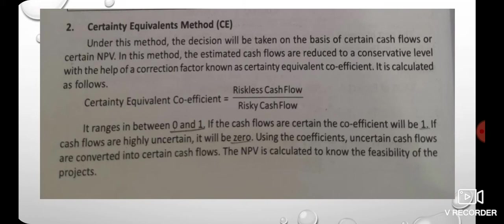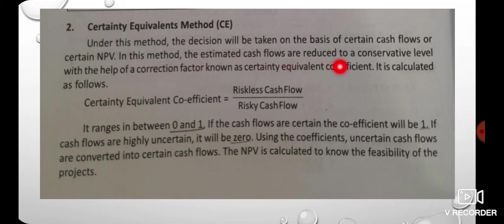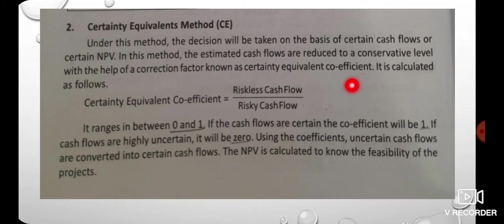Under the certainty equivalent method, the decision will be taken on the basis of certain cash flows or certain NPV. In this method, the estimated cash flows are reduced to a conservative level with the help of a correction factor called the certainty equivalent coefficient. We will discuss the conversion of cash flows on a certainty basis.